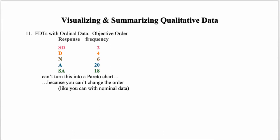As with nominal data, for ordinal data we can still create a frequency distribution table by counting how frequently each value occurred. In this example, people responded to a survey rating an experience: 2 strongly disagreed, 2 disagreed, 6 were neutral, 20 agreed, and 18 strongly agreed. We can't turn this into a Pareto chart because we can't change the order of these responses.